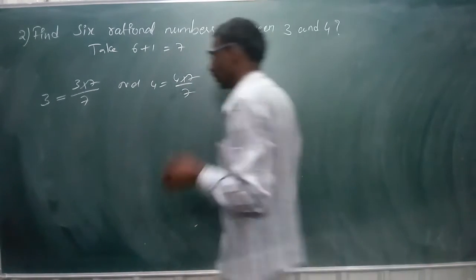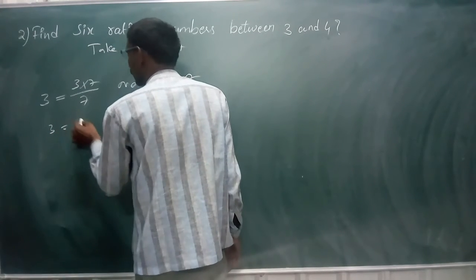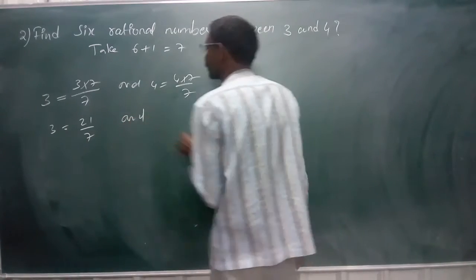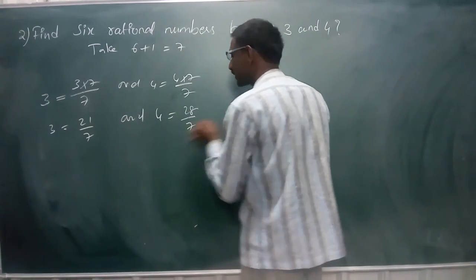Is it clear? So 3 is equal to 21 by 7. Fine. 4 is equal to 28 by 7.